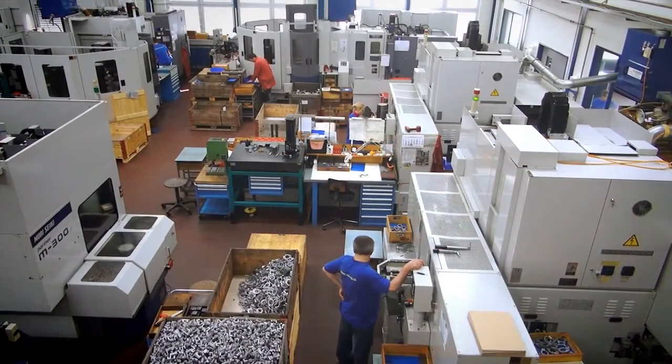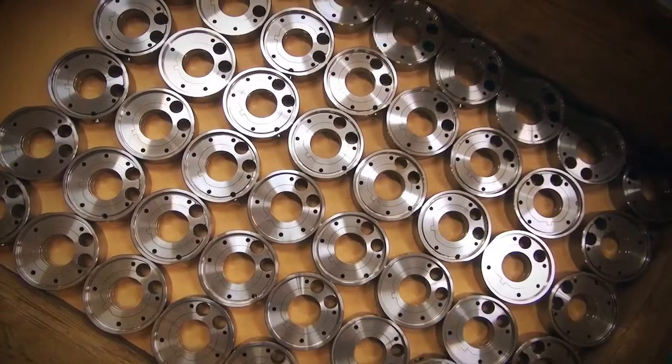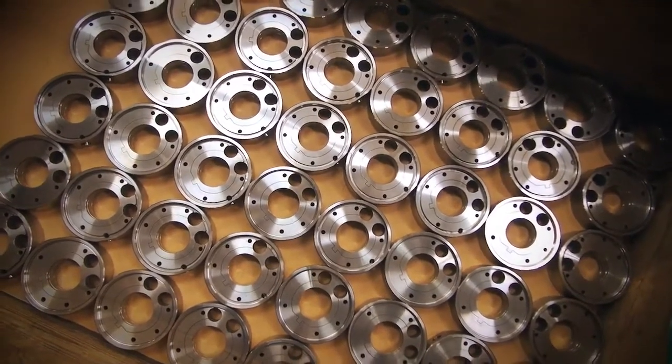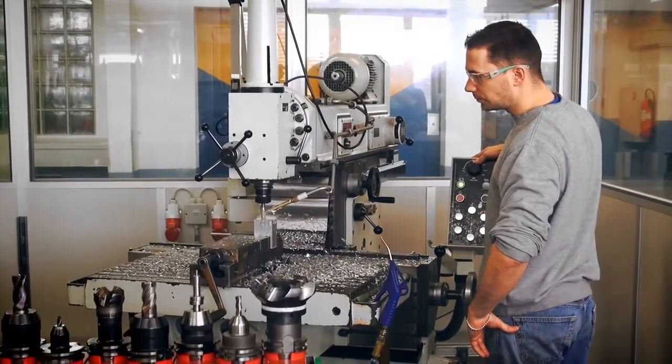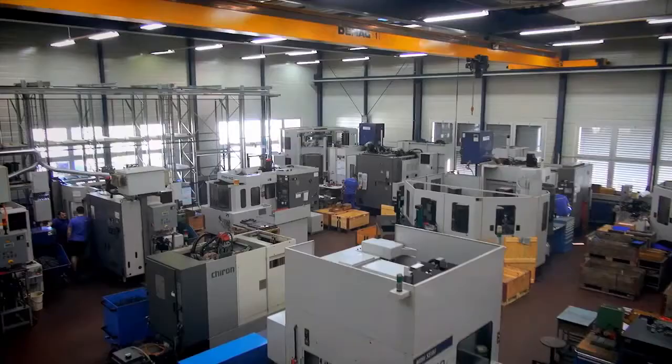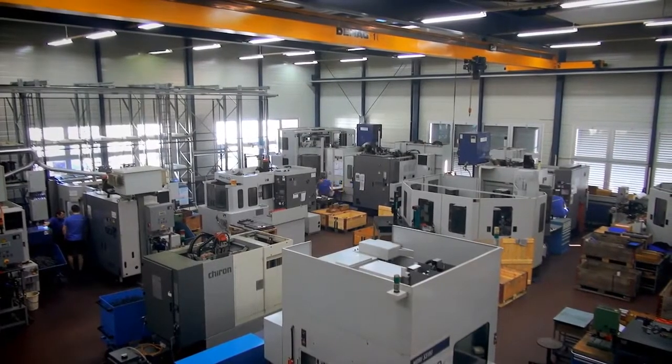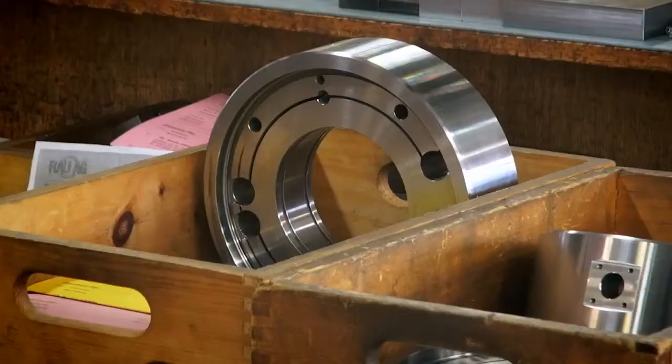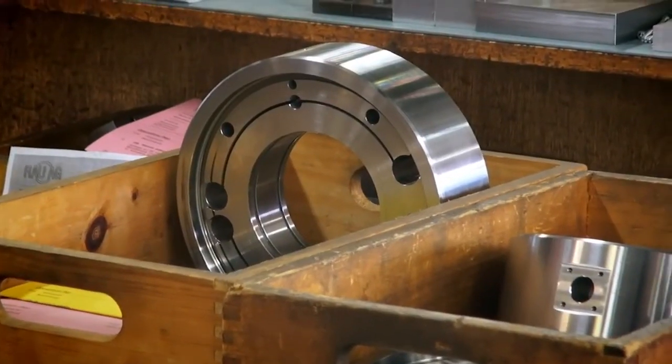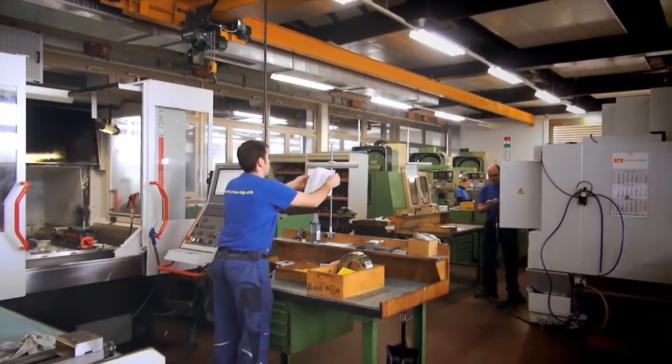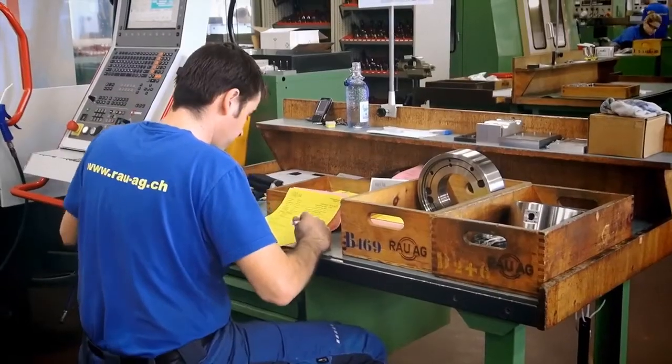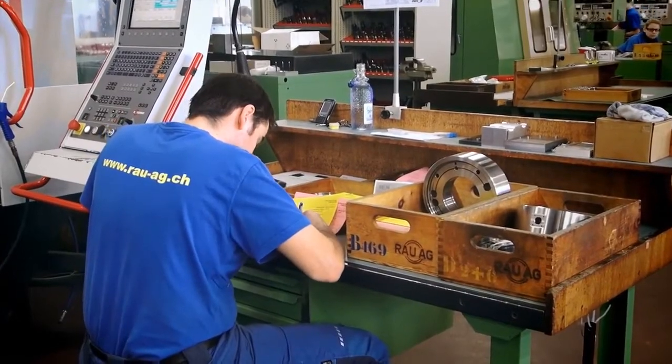Hardness testing is one of the oldest and most commonly applied inspection methods for metallic materials. One reason for this is that hardness itself is a useful material parameter. Another reason is that there are more or less direct relationships between hardness and other important material properties that are much more difficult to measure directly, such as tensile strength, yield strength, or fatigue behavior.